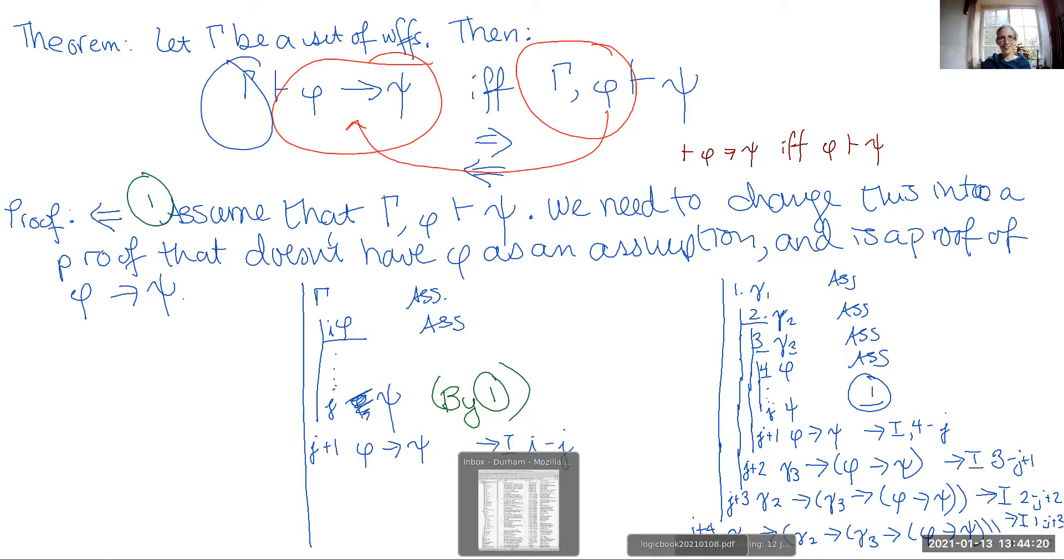So there you have it. It's the deduction theorem and its proof. We will use this in proving the soundness of the various basic proof rules that we've introduced in previous videos. And you'll see why it's important because it allows us to kind of strip away our assumptions so that essentially you have fewer things that you need to be dealing with.